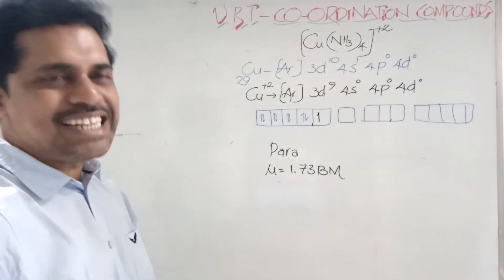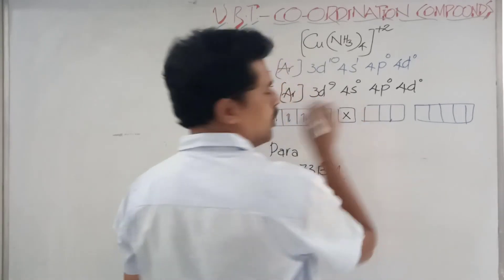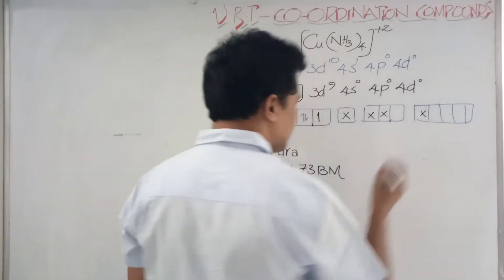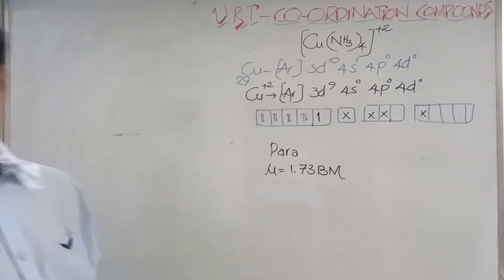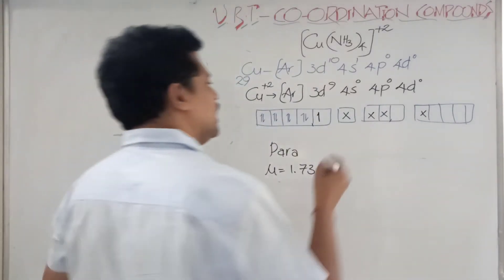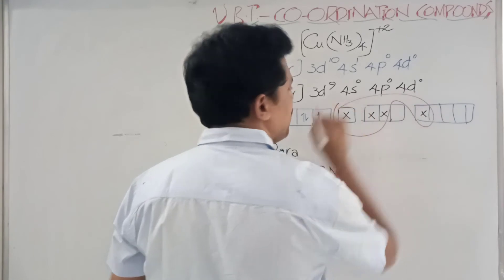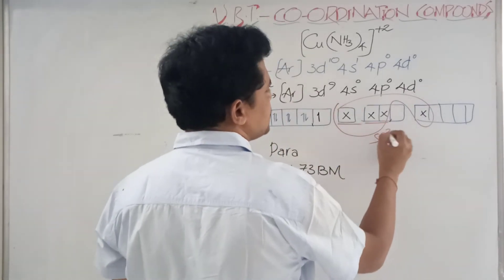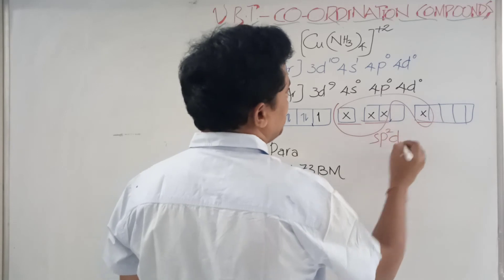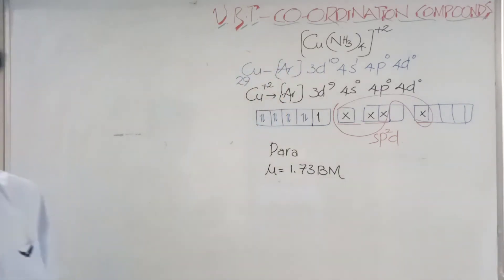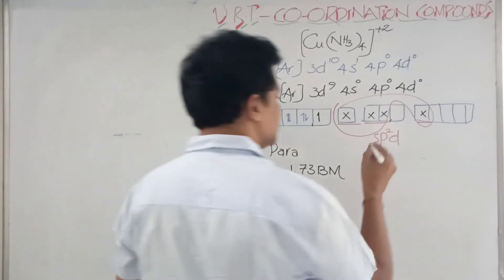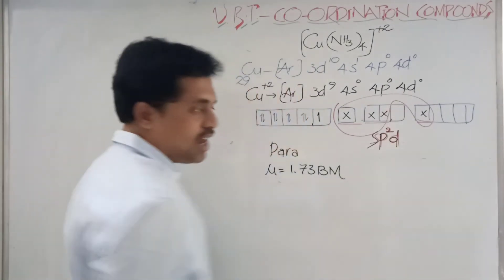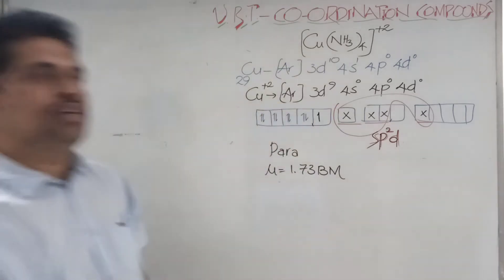It is square planar, so one s orbital, two p orbitals, and one d orbital is mandatory. So what is again suggested is one s orbital, two p orbitals, and one d orbital coming from here. So here you see, this is the hybridization: one s orbital, two p orbitals, and one outer d orbital is coming.